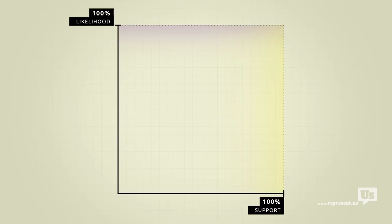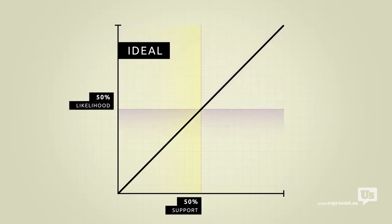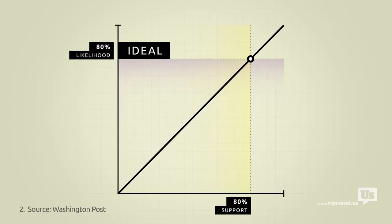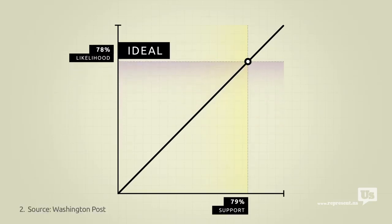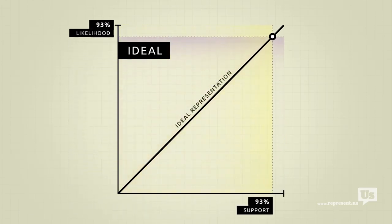On this graph, an ideal republic would look like this. If 50% of the public supports an idea, there's a 50% chance of it becoming law. If 80% of us support something, there's an 80% chance. You get the idea. Now, most Americans would probably agree that, with a few exceptions, we should be as close to this ideal as possible.